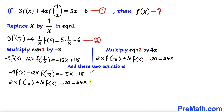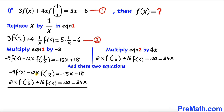Now let's go ahead and add these two equations. The negative 12x times f of 1 over x and the positive 12x times f of 1 over x cancel out. On the left hand side we are left with 7 times f of x, and on the right hand side we get negative 39x plus 38.